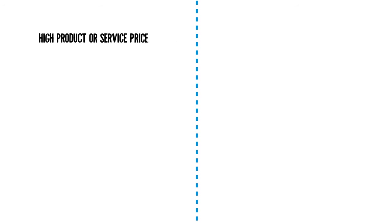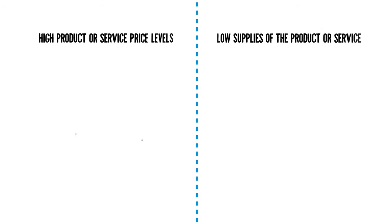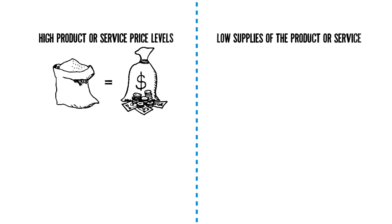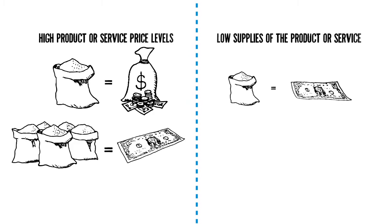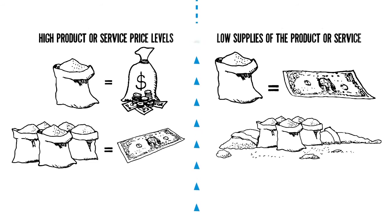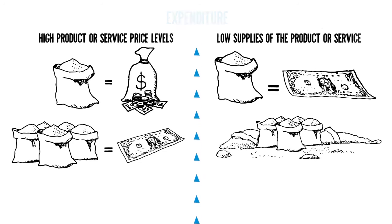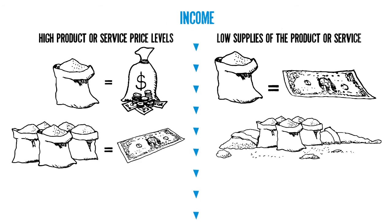High product or service price levels in a number of adjoining countries imply lower supplies of the product or service in comparison to demand. So, if flour is expensive, economic theory suggests that it is because there is insufficient flour for the bakeries in our neighborhood. And vice versa, a low price of flour could indicate a surplus — more flour is being made than used. Similarly, among neighboring countries, high real expenditure implies high income or price levels and hence more demand for products and services, while low real expenditure implies low income or price levels and hence low demand.